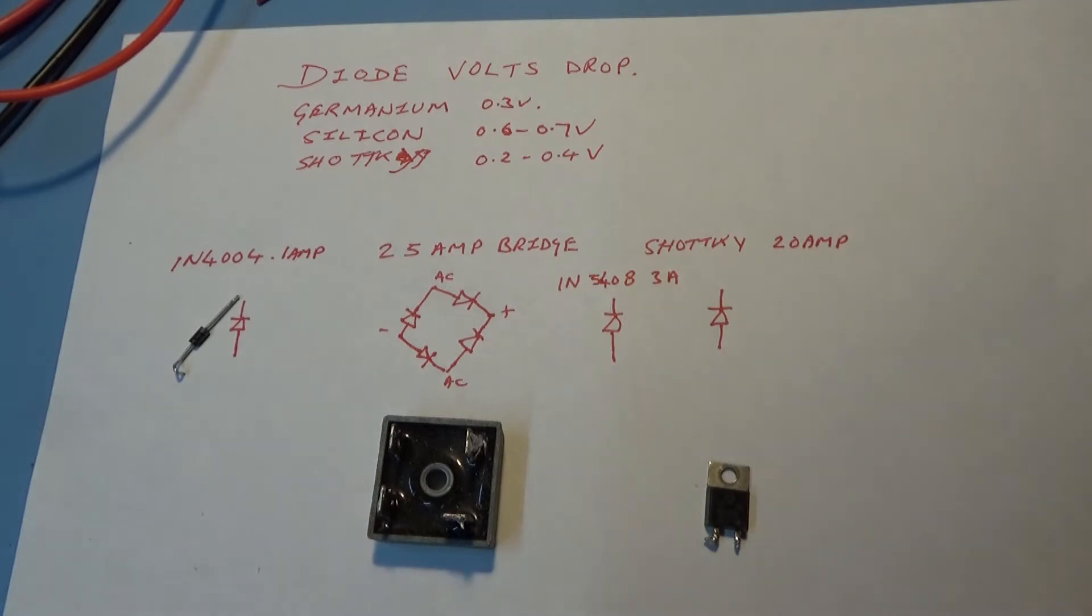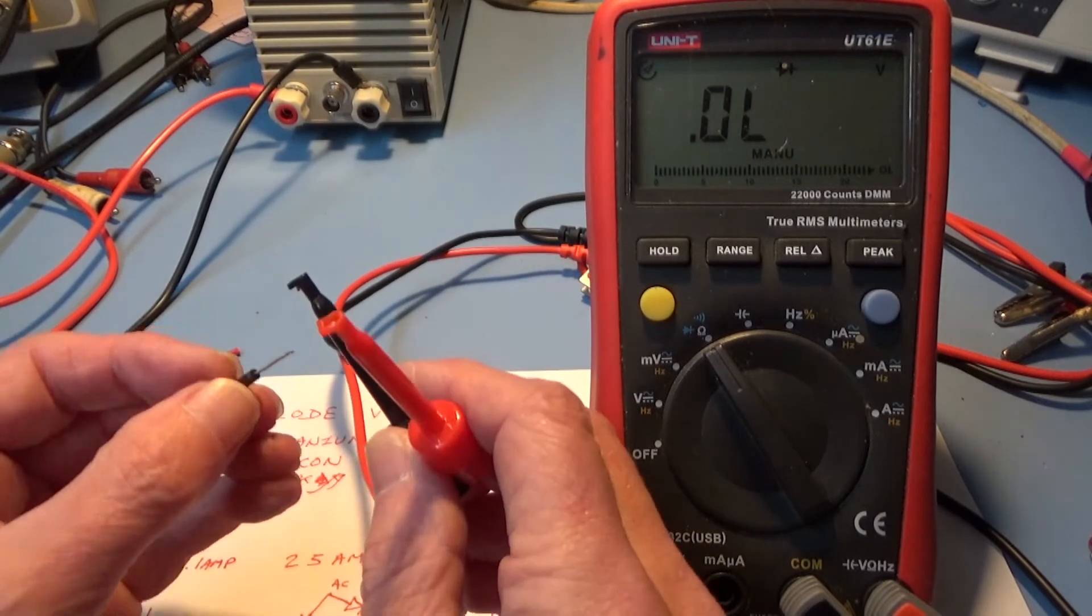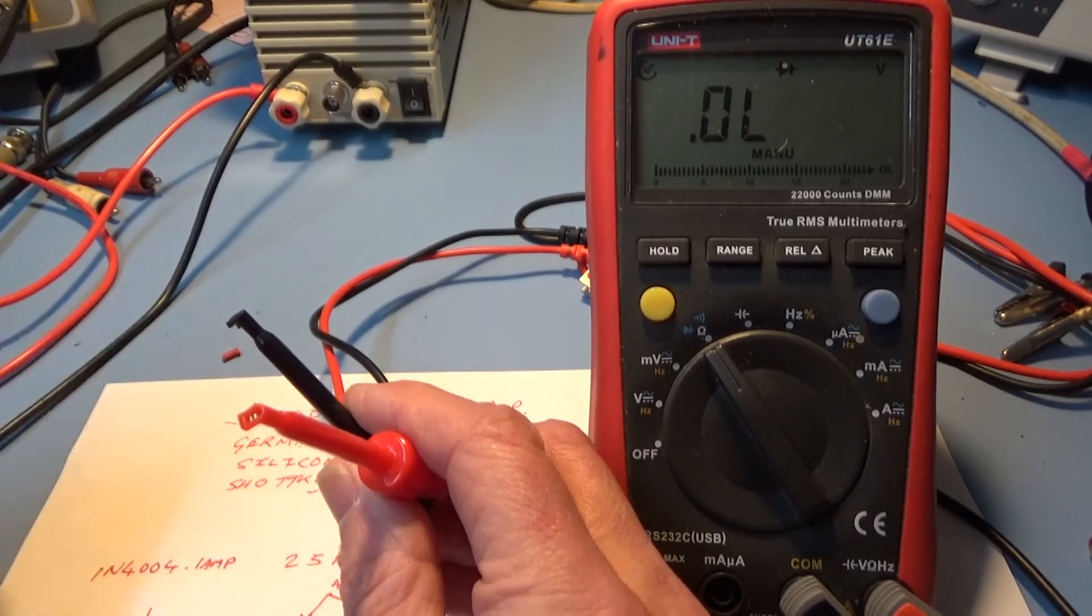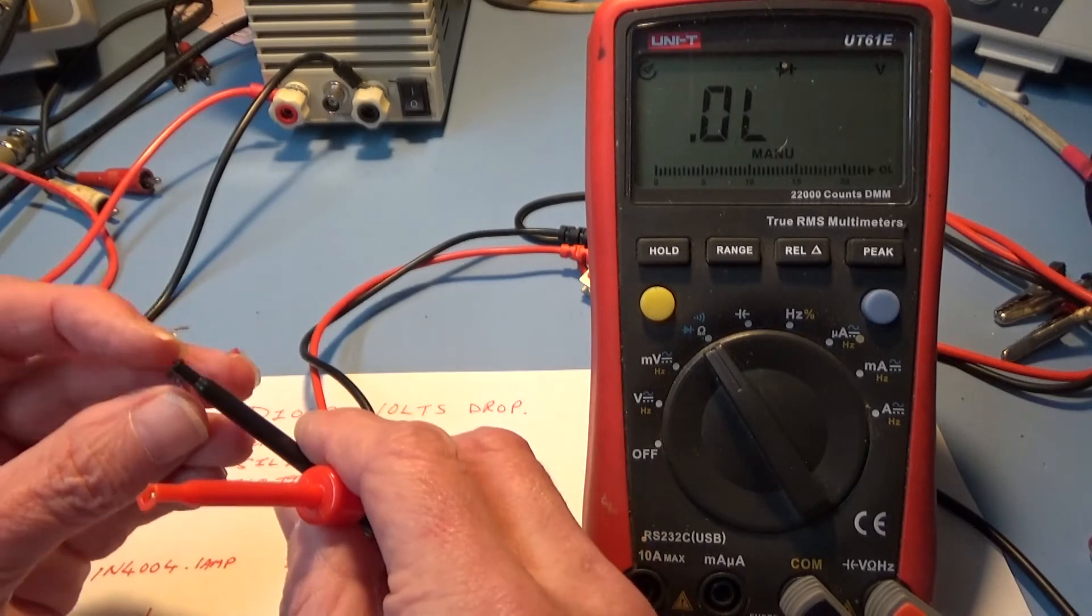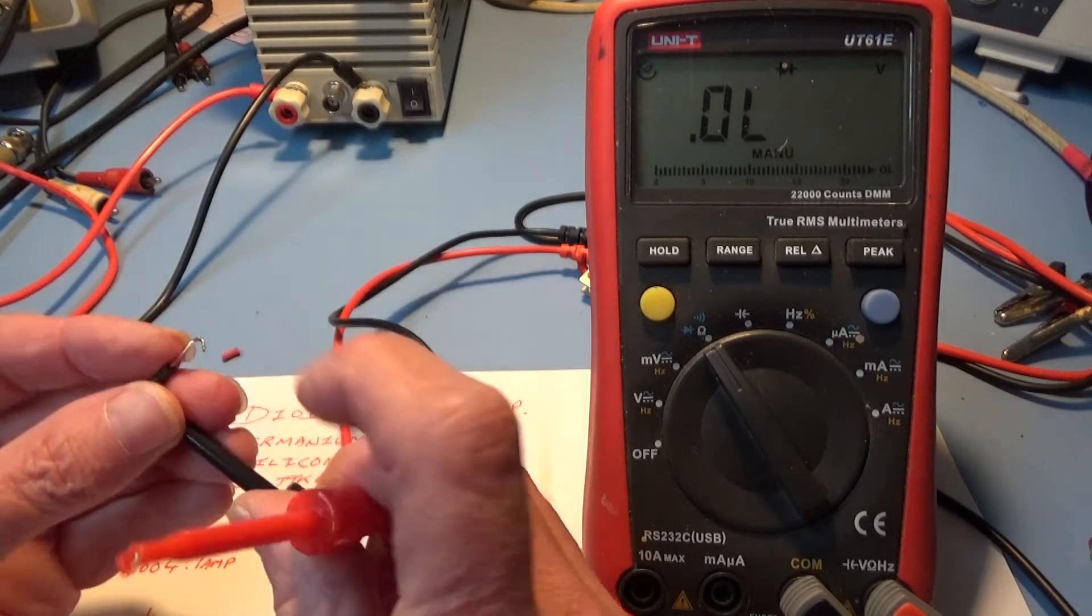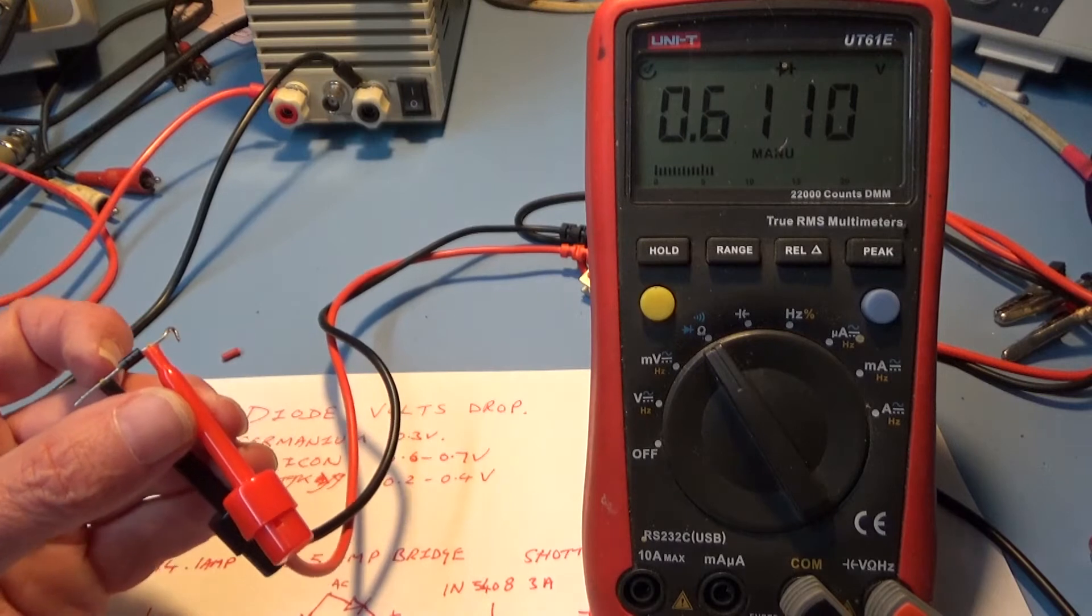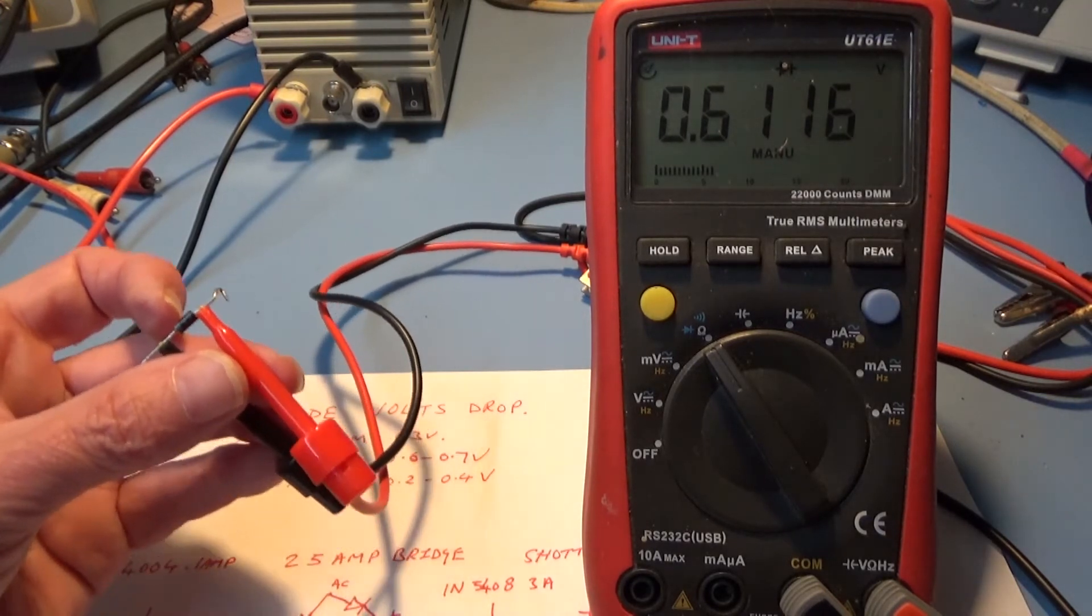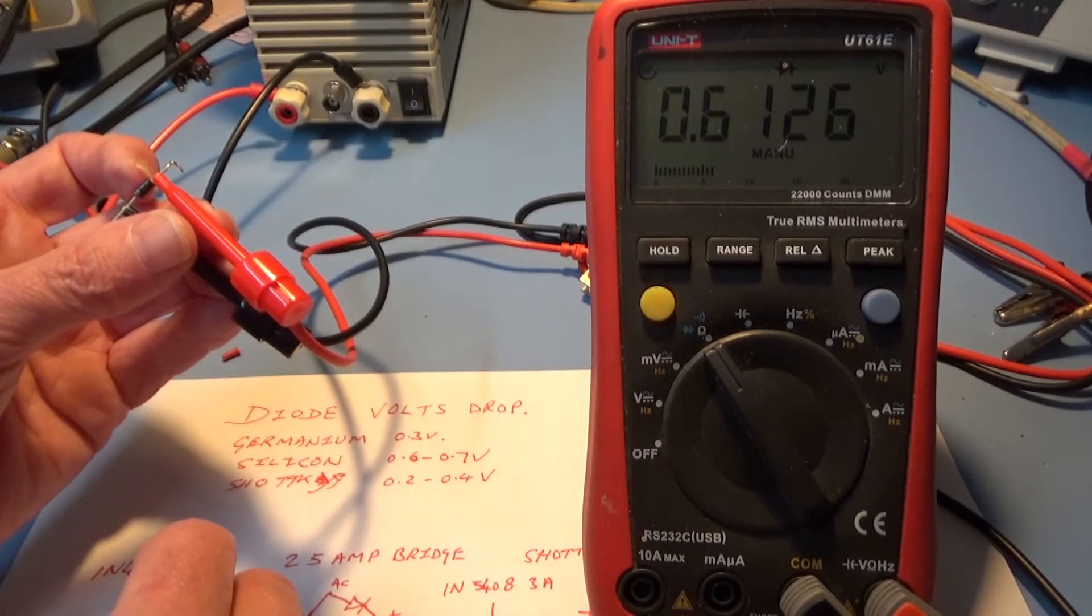Okay, first one I'm going to test is 1N4004, very boring little diode. I think that means it's got a PIV of 500 volts, been around for years, silicon diode obviously. As you can see we got 0.6 volts, much as you expect.